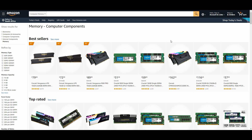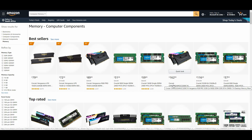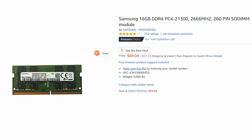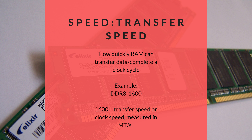Then there's the RAM module's speed. When you look at RAM descriptions, you may have seen RAM referred to by two sets of numbers, like DDR3-1600 and PC3-12800. These both refer to different aspects of the RAM's speed. In a descriptor like DDR3-1600, the 1600 refers to the transfer speed or clock speed, measured in megatransfers per second — essentially how many clock cycles or transfers it can complete per second. So DDR3-1600 RAM operates at 1600 megatransfers per second.